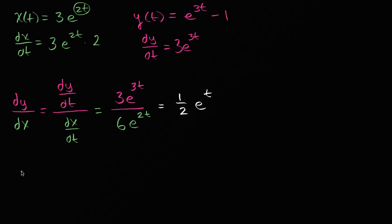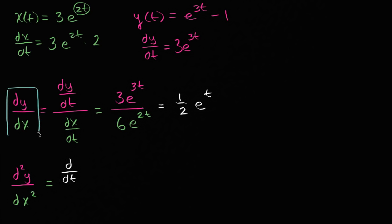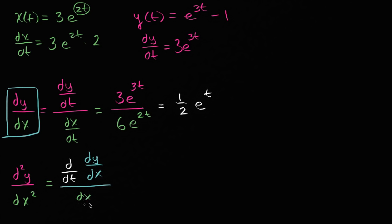Now how do we find the second derivative of y with respect to x? I'll give you a hint: we're going to use this same idea. If you want to find the rate of change of something with respect to x, you find the rate of change of that something with respect to t and divide it by the rate of change of x with respect to t. So the second derivative is going to be the derivative of the first derivative with respect to t, all over dx/dt.